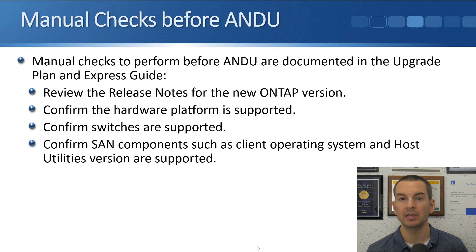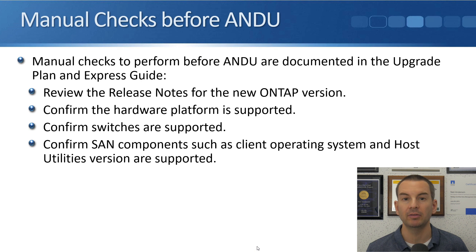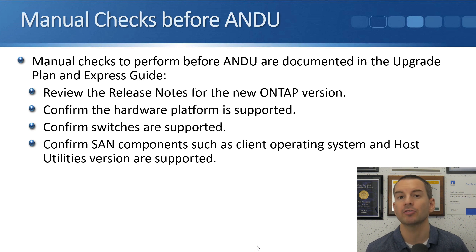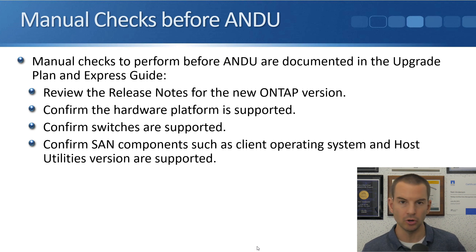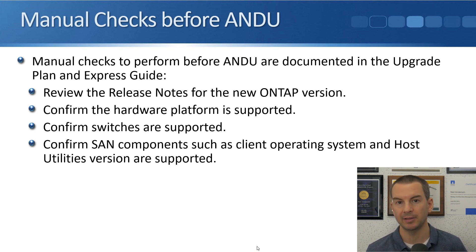Also check the switches that you're using — the cluster switch and also your network switches — to confirm that they are supported and you're using the correct configuration on there. Confirm any SAN components: if you're using SAN protocols on your system, make sure that the clients are using a supported operating system — one that is supported in the new version of ONTAP that you're going to upgrade to, not just the old one.